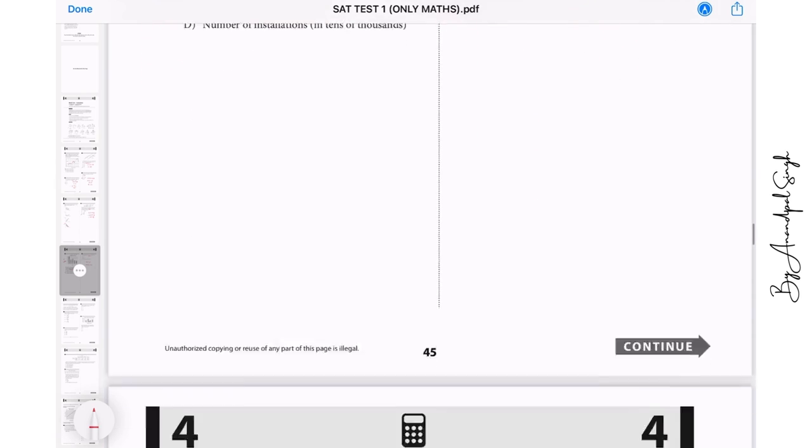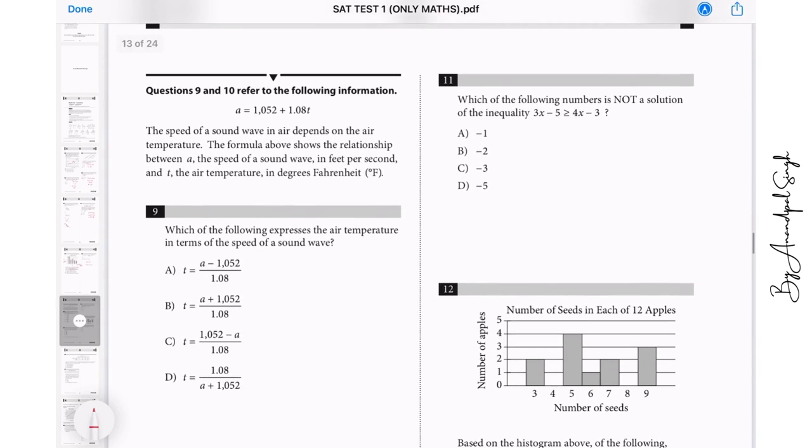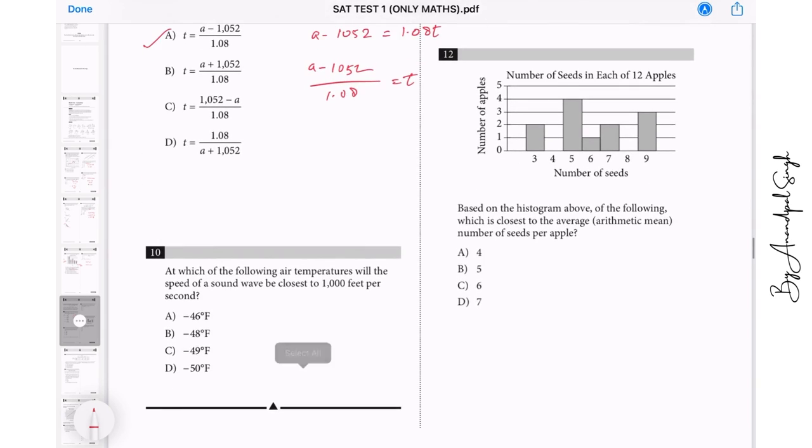It means it can never be equal to zero, therefore no such value of n is possible. Question number nine and ten refer to this equation: a equals 1052 plus 1.088t, and we need to find t in terms of a. First of all, just subtract 1052 from both sides, then dividing by 1.08 on both sides, we get t. So I think that should be option number A.